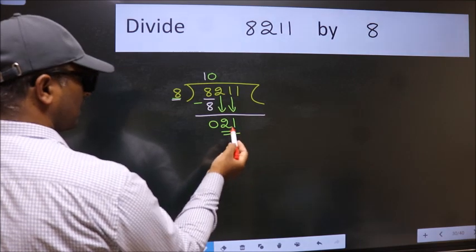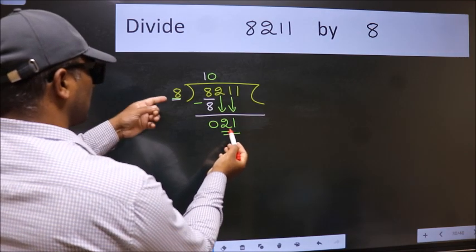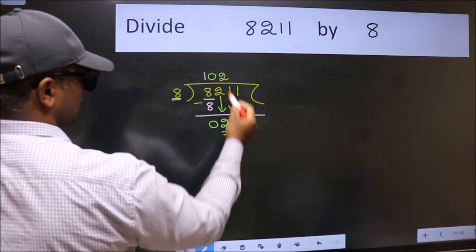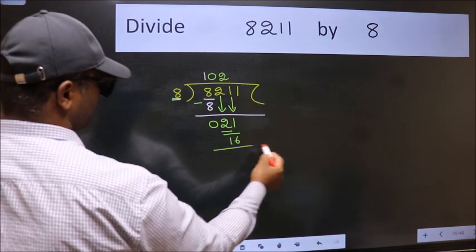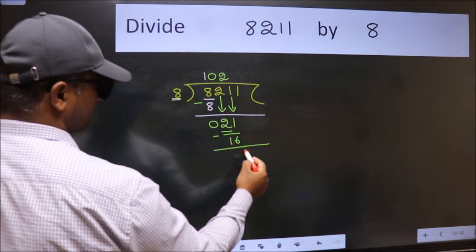So, 21. A number close to 21 in 8 table is 8 to 16. Now, we subtract. We get 5.